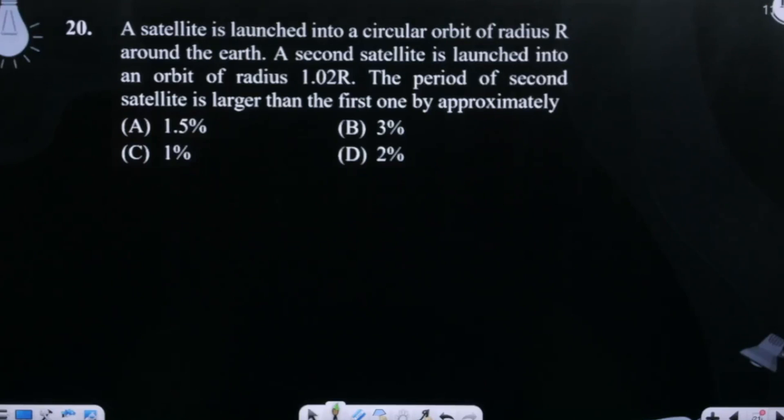A satellite is launched into a circular orbit of radius R about the earth. A second satellite is launched into an orbit of radius 1.02R. The period of the second satellite is larger than the first by approximately...